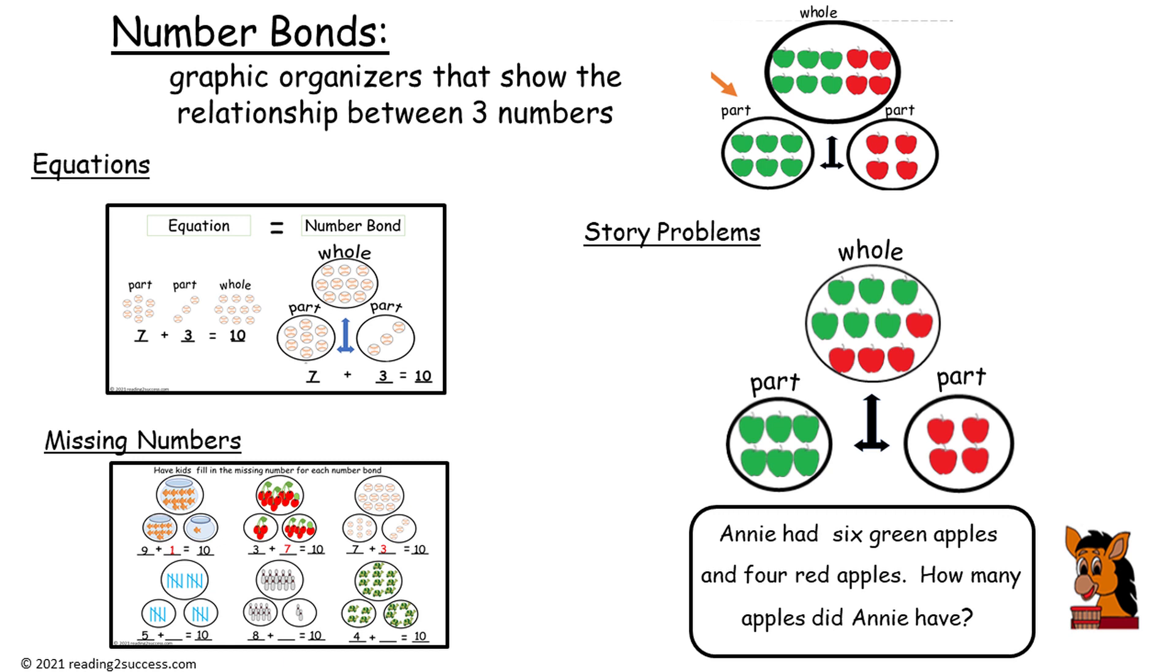So we have one part—six green apples, another part—four red apples, and the whole, which is ten, and it consists of six green apples and four red apples.